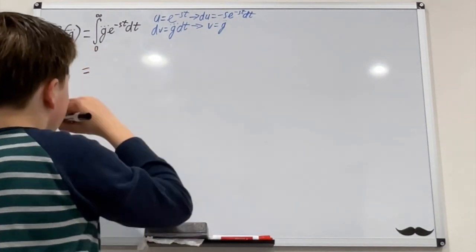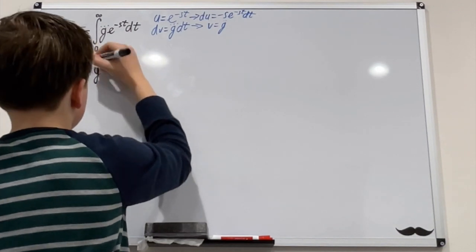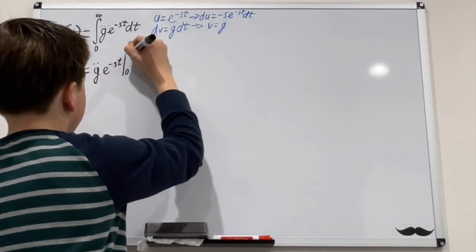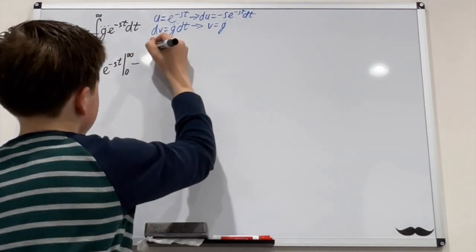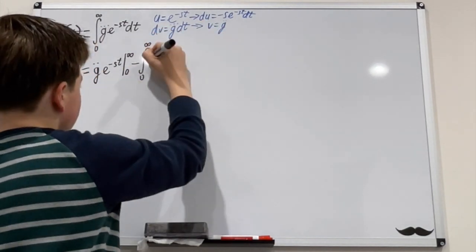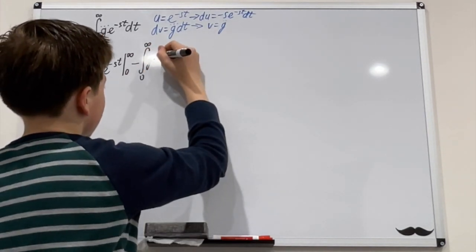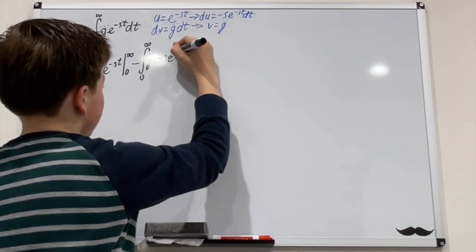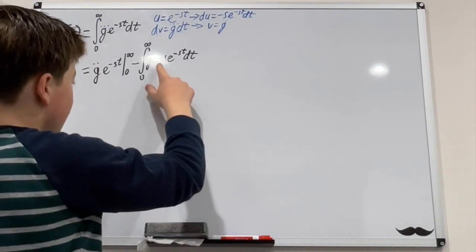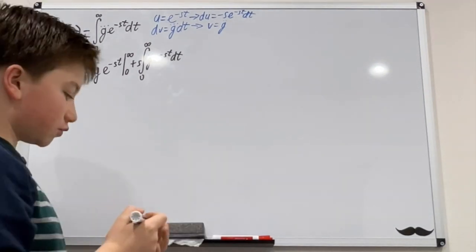This will equal u·v, so g-double-dot times e to the negative st, evaluated from zero to infinity, minus the integral from zero to infinity of v·du, which is g-double-dot times negative s·e to the negative st dt. We can bring this negative s out to tidy things up. Let's do integration by parts one more time.